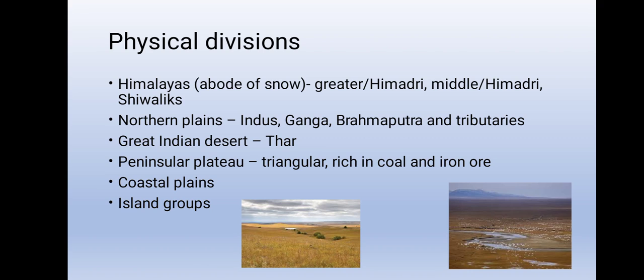The western coastal plains are very narrow whereas the eastern coastal plains are much broader. There are a number of east-flowing rivers — Mahanadi, Godavari, Krishna, and Kaveri — which drain into the Bay of Bengal. These rivers have formed fertile deltas at their mouths. The Sundarbans Delta is formed where the Ganga and Brahmaputra flow into the Bay of Bengal.